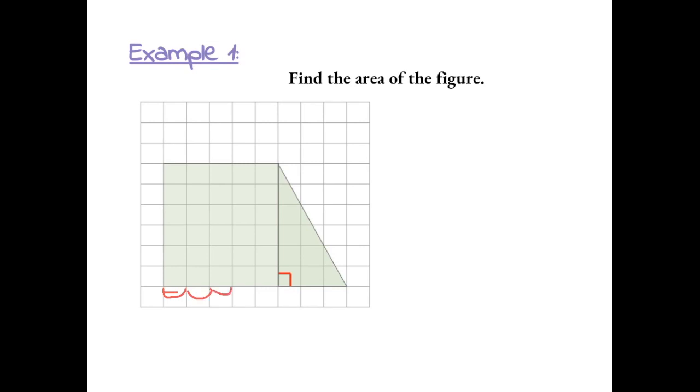So we have 1, 2, 3, 4, 5. And then the side is 1, 2, 3, 4, 5, 6. So it's actually a rectangle. The area of this is 6 times 5, which is 30. So this part of the shape is 30. And now we need to find the area of the triangle.